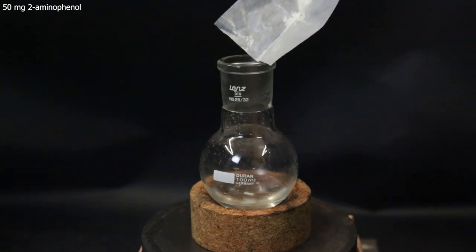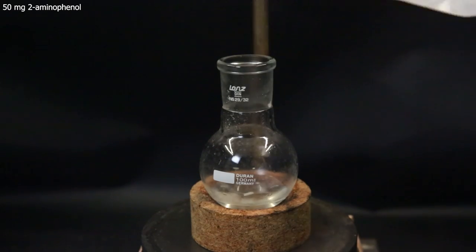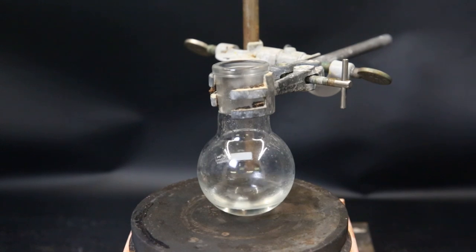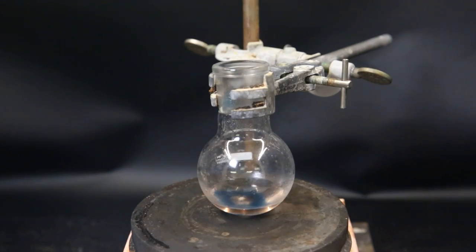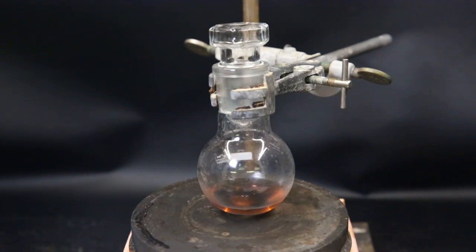Afterward, I add 50 milligrams of 2-aminophenol. Then I clamp the flask down and start stirring. Now to start the reaction, I add 200 milligrams of copper 2-acetate monohydrate. I simply stopper the flask and leave it to stir for a few hours. We can see the reaction mixture quickly starts changing color.